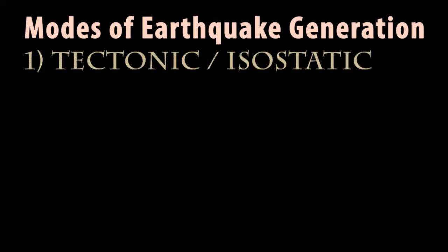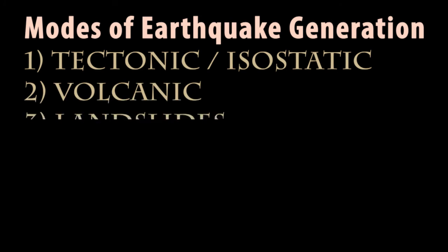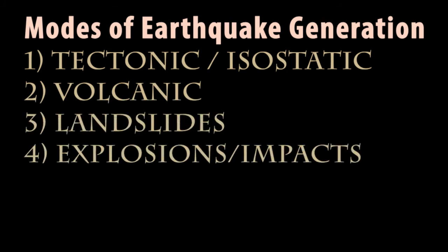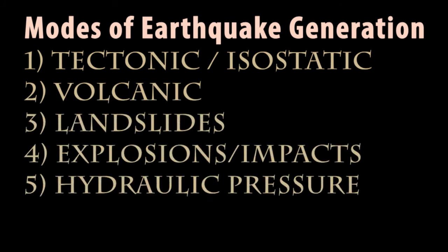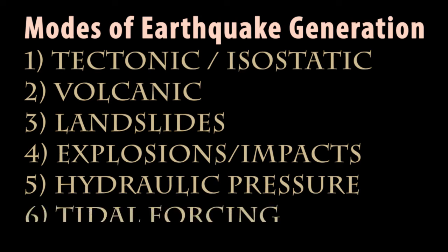Ultimately, we see six main modes of earthquake generation: tectonic and isostatic stresses; volcanic eruptions; landslides; explosions and impacts; the increase in hydraulic pressure as an inducer and threshold diminisher for earthquakes; and tidal forcing from the sun and moon's gravitational pulls.